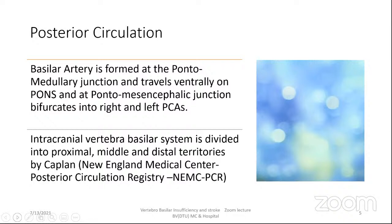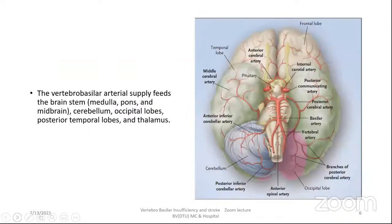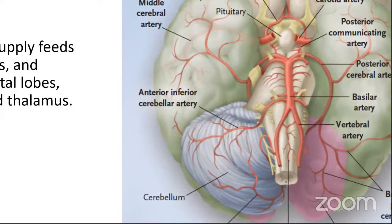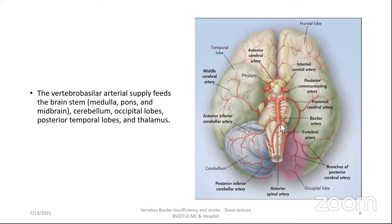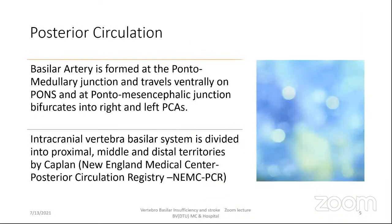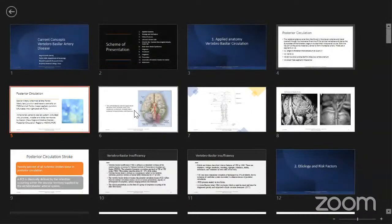The basilar artery forms at the pontomedullary junction, travels ventrally on the pons, and at the pontomesencephalic junction bifurcates into the right and left posterior cerebral arteries. The intracranial vertebral system is divided into proximal, middle, and distal territories by Dr. Kaplan in the New England Medical Centre Posterior Circulation Registry (NEMC-PCR). The vertebral basilar system supplies the brain stem — medulla, pons, midbrain — cerebellum, occipital lobes, posterior temporal lobes, and the thalamus.